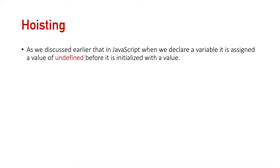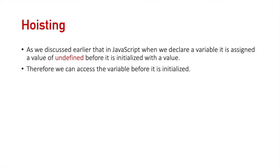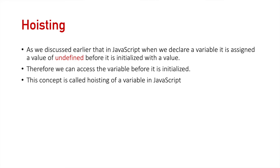Now let's talk about the concept of hoisting. As we discussed earlier, when we declare a variable in JavaScript, it is assigned a value of undefined before it is initialized with a value. Therefore, we can access the variable before it is initialized. This concept is called hoisting of a variable in JavaScript. In simple terms, hoisting means that we can access the variable before it is initialized with a value.